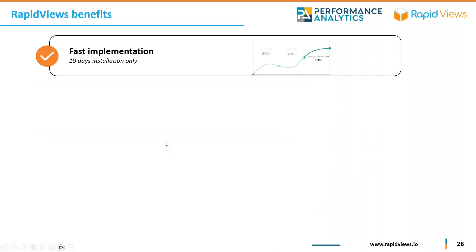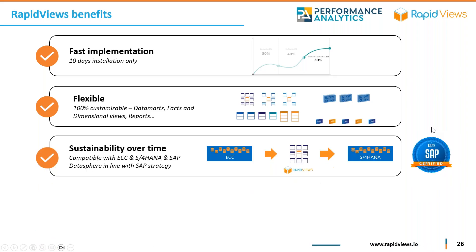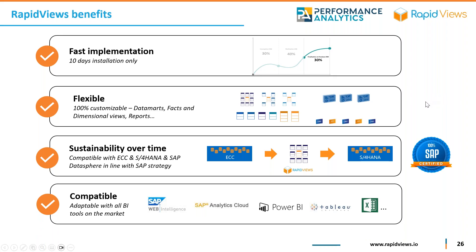Those BI Accelerators offer the biggest advantage of just 10 days installation per module — a very fast implementation. You remain fully flexible because they are all 100% customizable: you can customize the reports, the data marts, facts and dimensional views, giving you full autonomy. It is totally in line with SAP strategy and best practices. Therefore, you have sustainability over time, guaranteed for the different versions of S/4HANA, and it is highly compatible with the different BI reporting tools on the market.